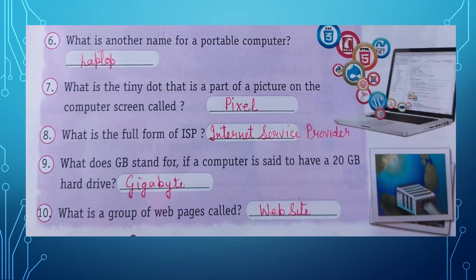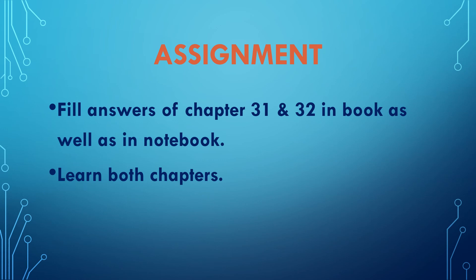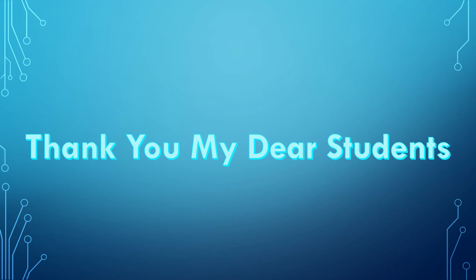Here are some question answers that we have already done — 10 question answers that we have discussed. Students, you have to complete this exercise in your notebook as well as in your copy. Today we have done two chapters: Chapter 31 on scientific instruments and Chapter 32 on techno terms — the terms used in computers. Learn both chapters and complete your book work and notebook. Thank you, have a nice day.